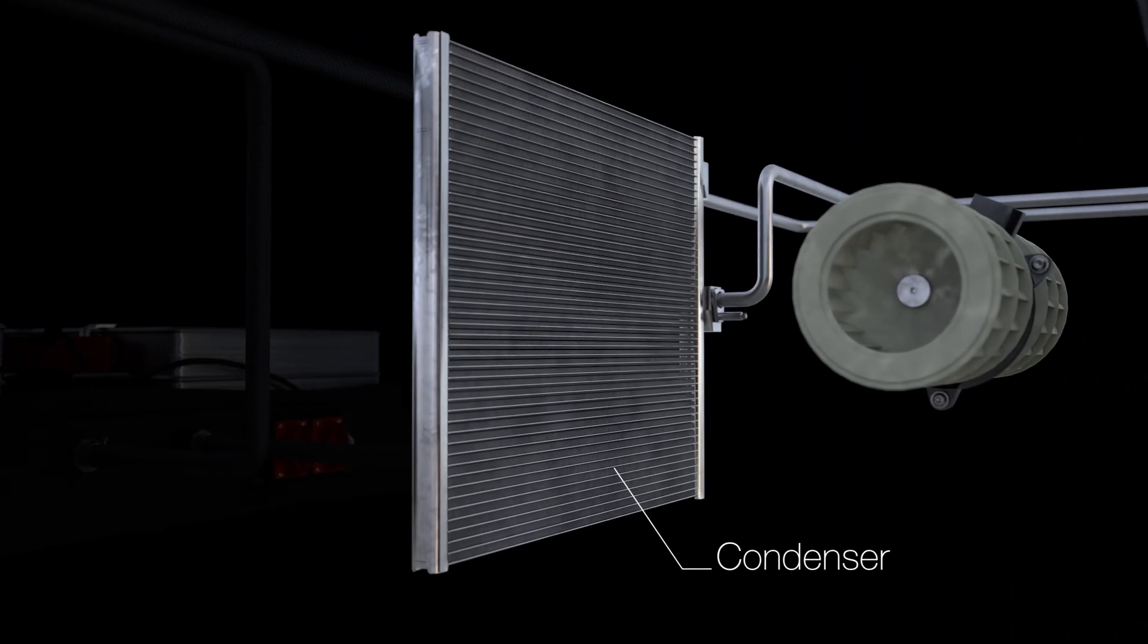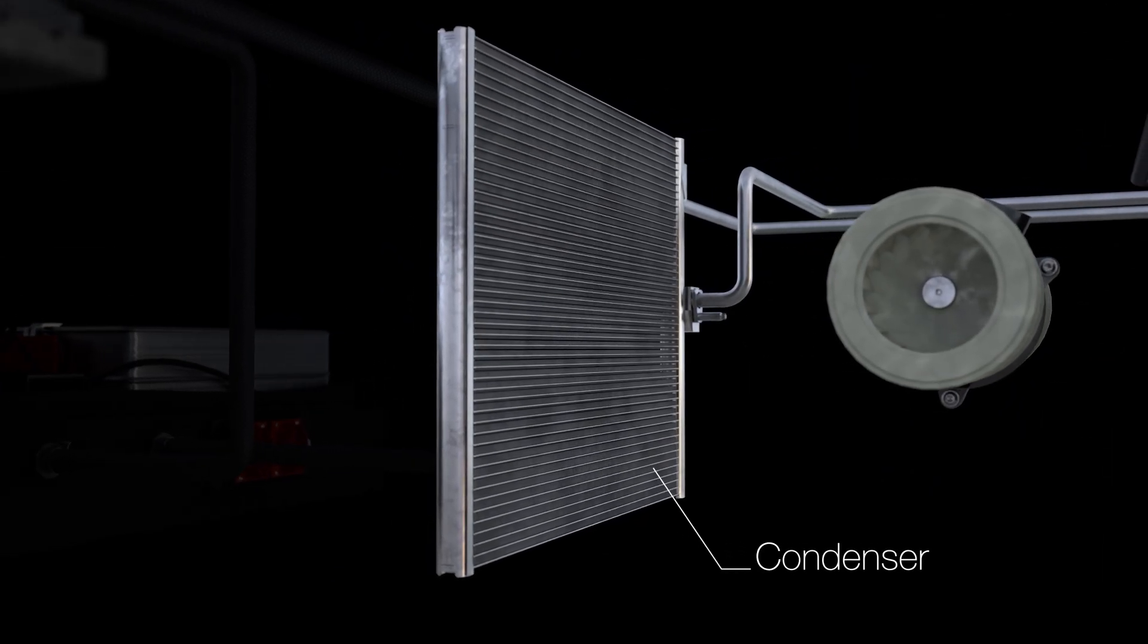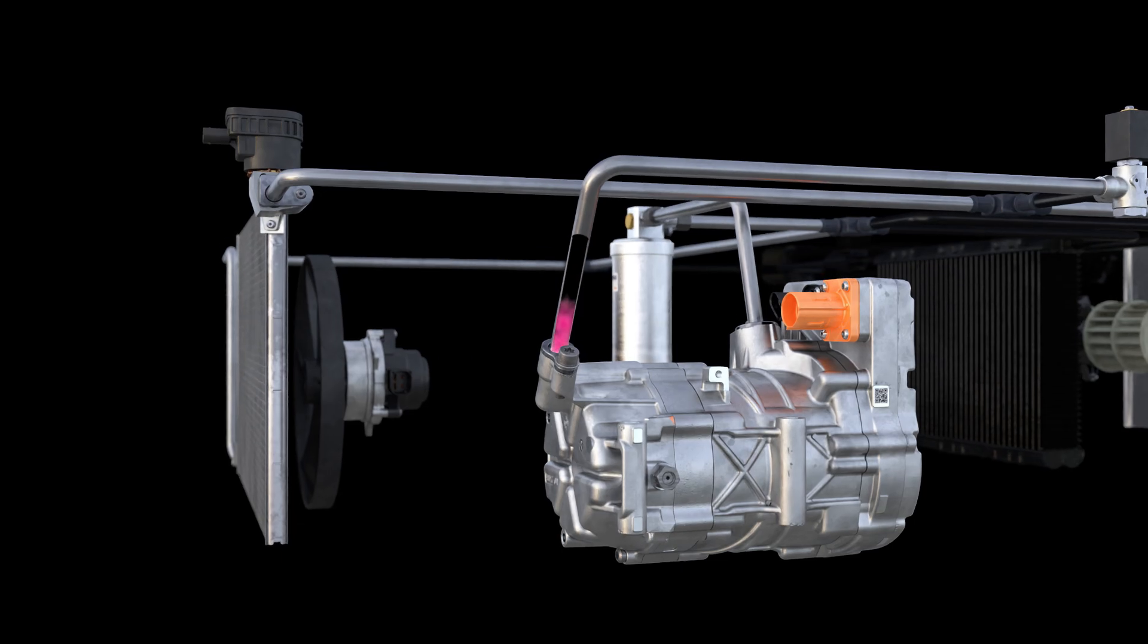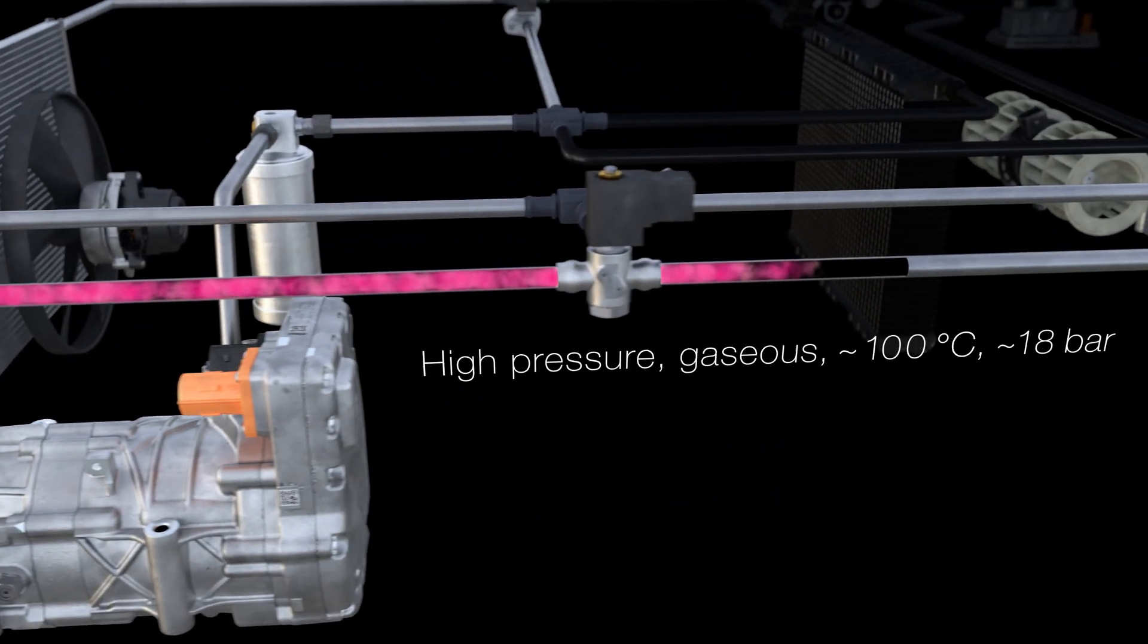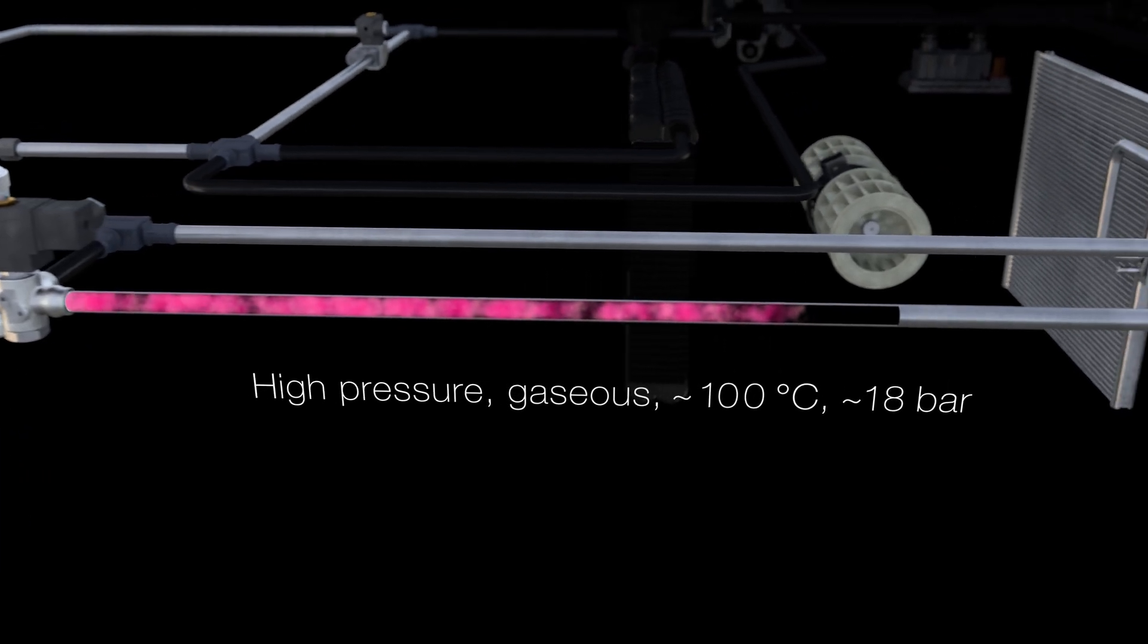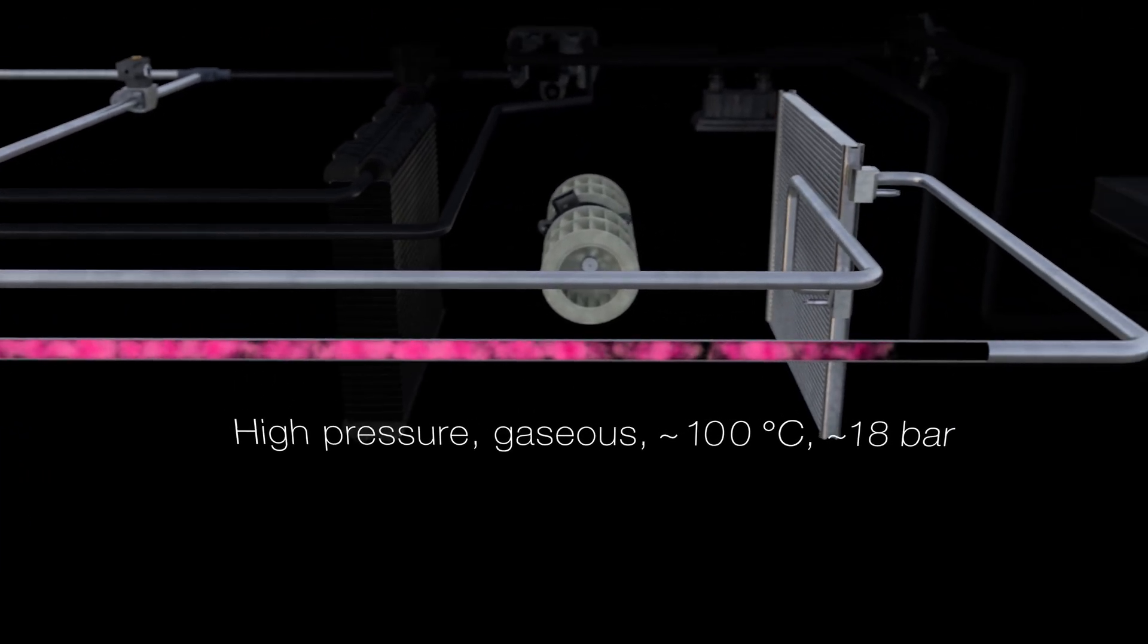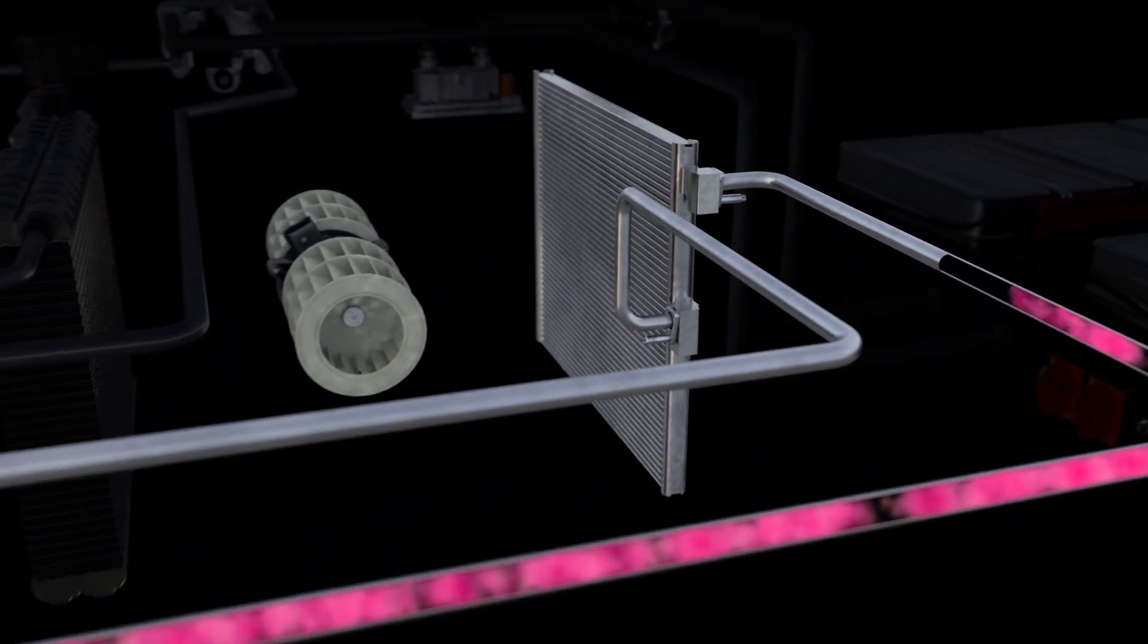An additional condenser is also required in the cabin's air tank. Once again, the compressed gaseous refrigerant leaves the air conditioning compressor at a pressure of around 18 bar and a temperature of approximately 100 degrees Celsius.